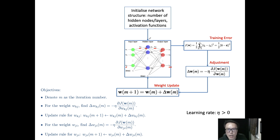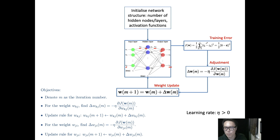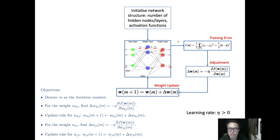Once we have the network topology ready, we calculate the training error J, which is the sum of squared error. We also need to prepare a training dataset. In the next section, I will show you the training dataset as well as the training error.